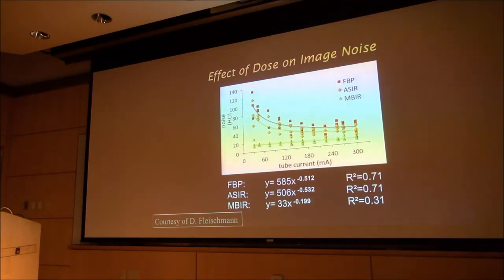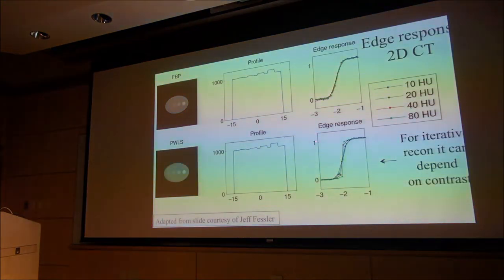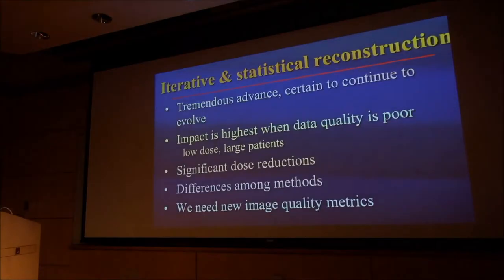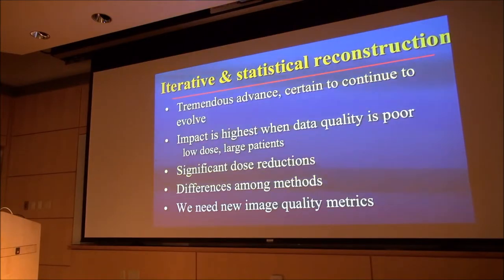What this tells us is noise level and signal to noise ratio no longer tells us anything about information content of a CT image with these non-linear reconstruction methods. The other thing you find is the resolution of a CT system as a fundamental parameter that we can measure, all of a sudden it's not. It depends on the contrast level. These statistical and iterative reconstruction algorithms are a tremendous advance, certain to have an impact. The impact is highest when the data quality is poor. Significant dose reductions can be obtained, although perhaps the manufacturers are trying to oversell them. There's a big difference among methods, and we need new image quality metrics because our old linear system metrics don't work.